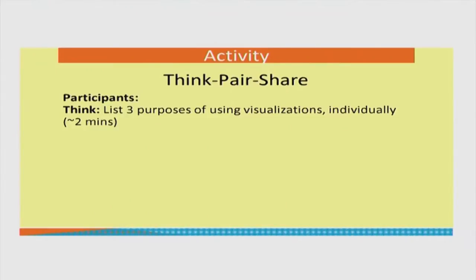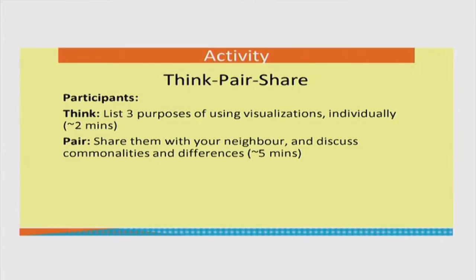If you have thought of three purposes, the next phase is a pair phase where we talk with your neighbor and discuss commonalities and differences. You would have come up with three purposes and your neighbor may have come up with the same or different purposes. Together you should now have about five purposes.